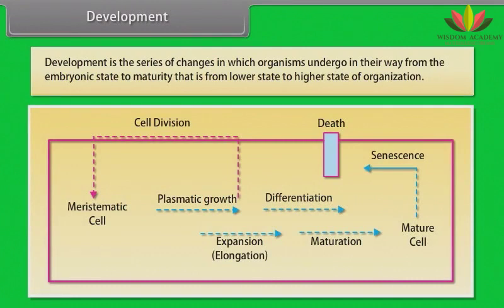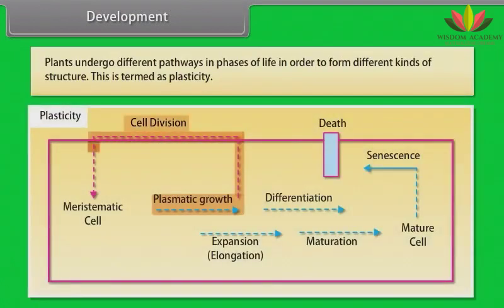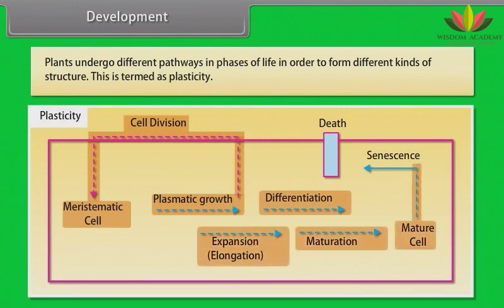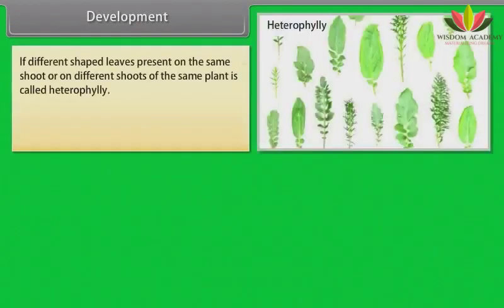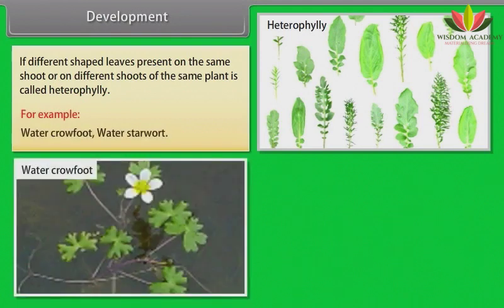Development is the series of changes in which organisms undergo in their way from the embryonic state to maturity, that is, from a lower state to a higher state of organization. Plants undergo different pathways and phases of life in order to form different kinds of structures — this is termed as plasticity. If different shaped leaves are present on the same shoot or on different shoots of the same plant, it is called heterophylly. Examples include water crowfoot and water starwort.